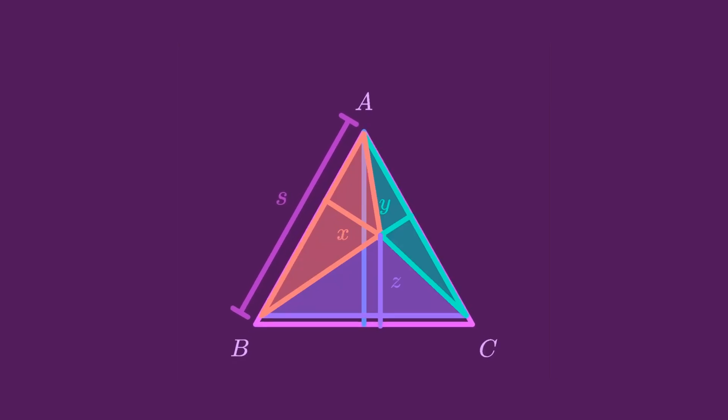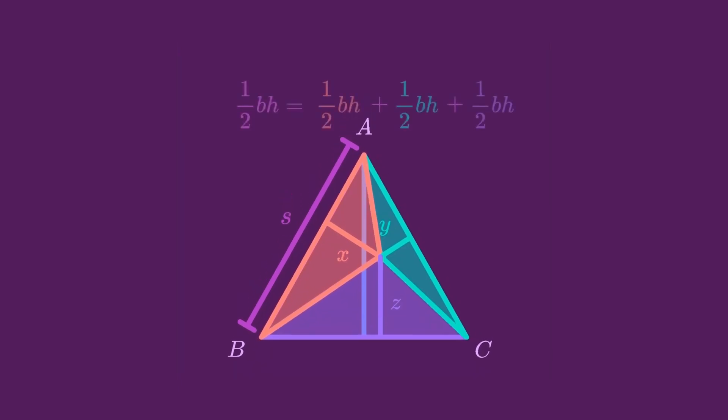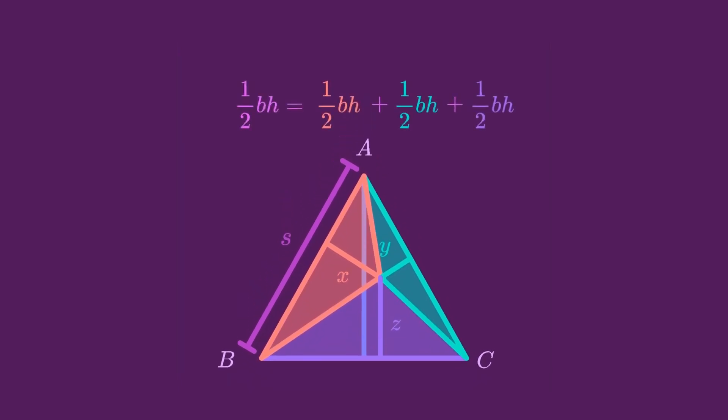And now the area of the original triangle is the sum of the areas of these three smaller triangles. We know the area of a triangle is one half BH. When we apply that formula here it gives us one half SH equals one half SX plus one half SY plus one half SZ.